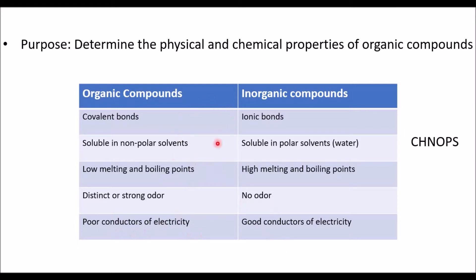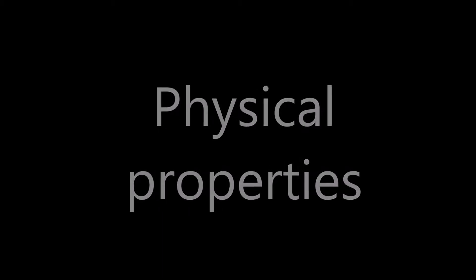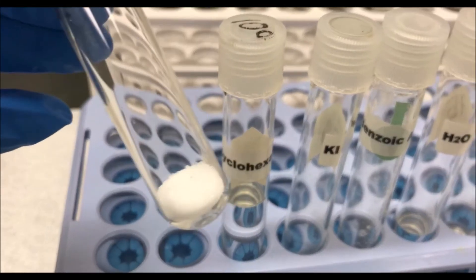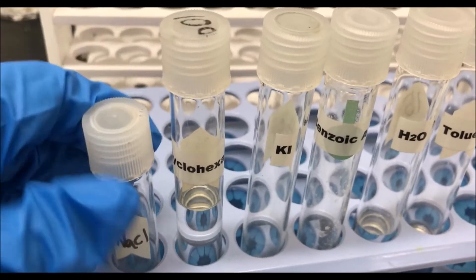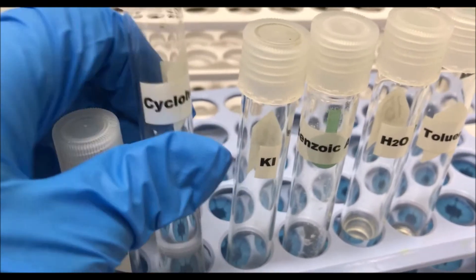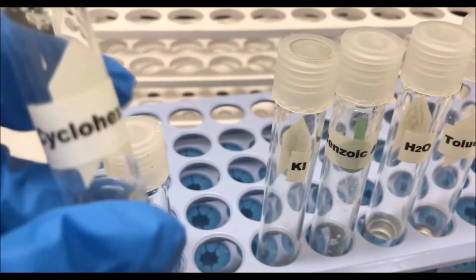In the first part of this lab, we compare the physical properties of a few organic and inorganic compounds. To determine the physical properties, we compare the color, odor, and physical states of these chemicals.